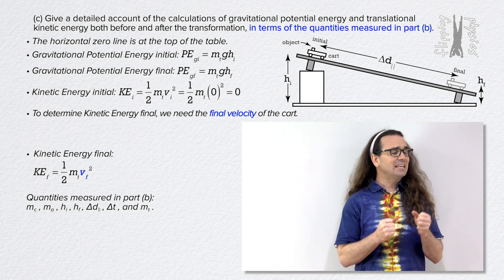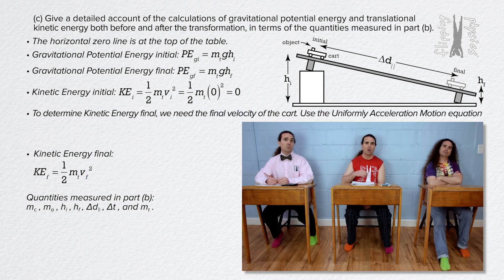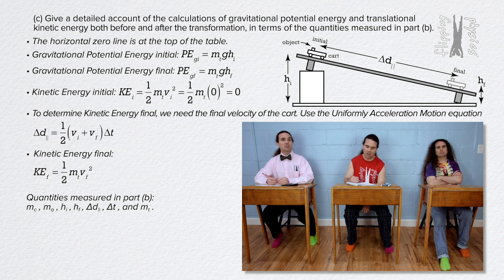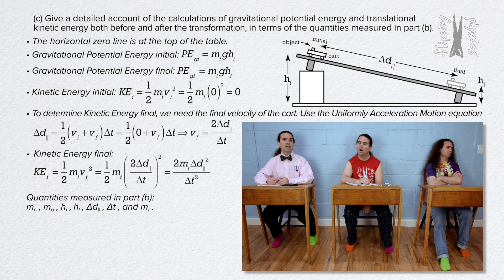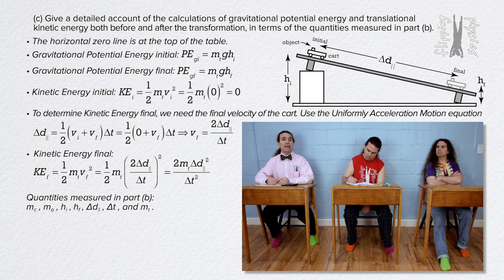Billy, one more time, keep going — you're doing a great job. We can use one of the uniformly accelerated motion equations to find the final velocity. Using the equation: displacement equals one-half times the quantity initial velocity plus final velocity, all times change in time. Since initial velocity equals zero, final velocity equals two times displacement divided by change in time: v_f = 2Δd / Δt. Substituting back into the kinetic energy equation: KE_f = 2 × m_t × Δd² / Δt². All of those variables were defined in Part B, so that is a complete answer for Part C.